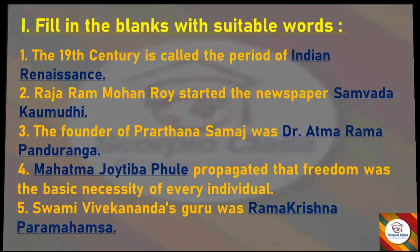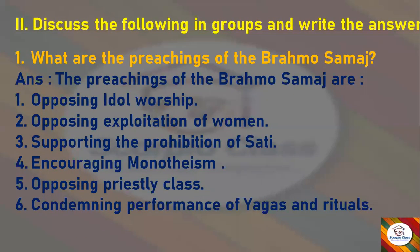Now let's go to the second main: question and answers. First question — what are the preachings of the Brahma Samaj? Answer: The preachings of the Brahma Samaj are opposing idol worship, opposing exploitation of women, supporting the prohibition of sati, encouraging monotheism, opposing the priestly class, and condemning the performance of yagas and rituals.